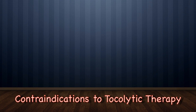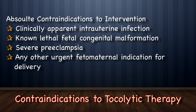When considering tocolytic therapy to prolong pregnancy, certain absolute and relative contraindications must be considered. Absolute contraindications are conditions in which prolongation of pregnancy is contraindicated per se — for example, clinically apparent intrauterine infection, known lethal fetal congenital malformation, severe pre-eclampsia, and any other urgent fetomaternal indication for delivery.